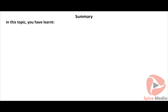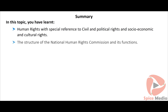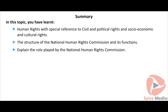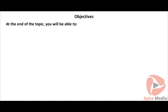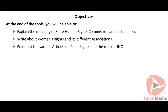In this topic you have learned about human rights with special reference to civil and political rights and socio-economic and cultural rights, the structure of the National Human Rights Commission and its functions. At the end of the next topic you will be able to explain the meaning of the State Human Rights Commission and its functions, write about women's rights and its different associations, and outline the various articles on child rights and the role of the UNO.